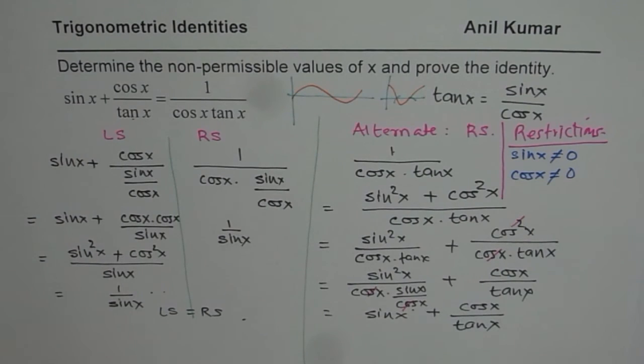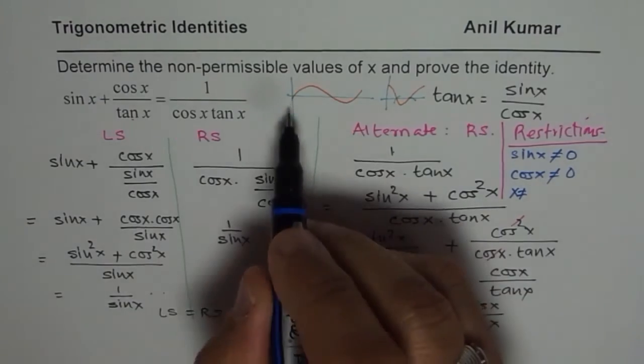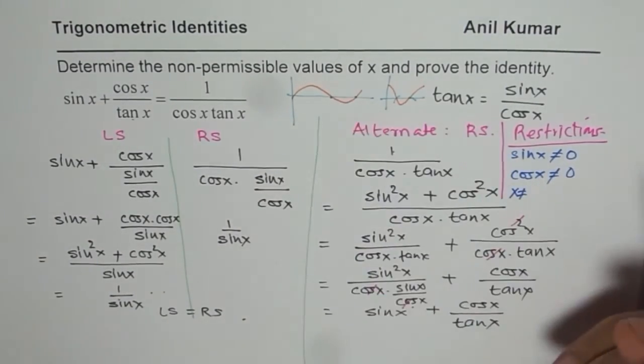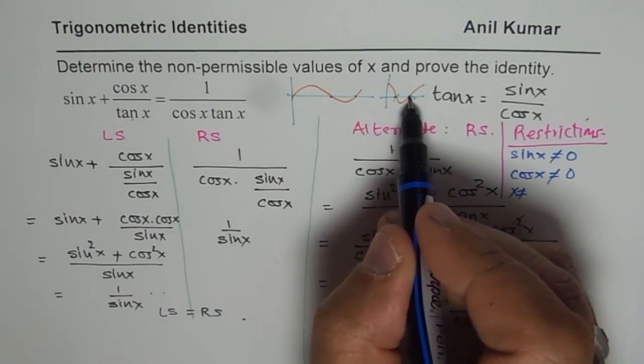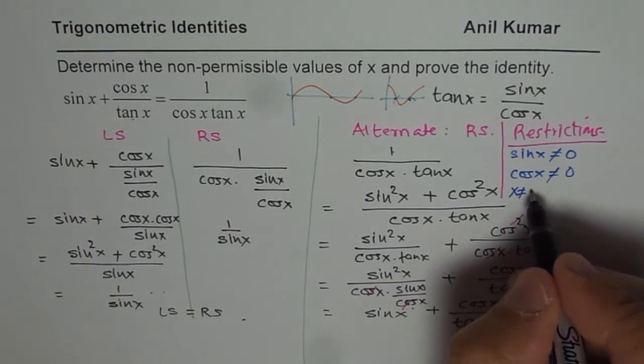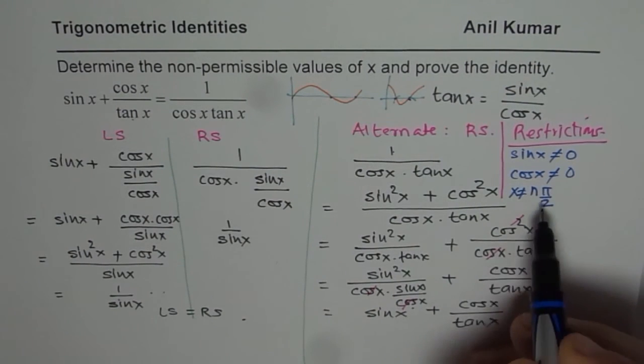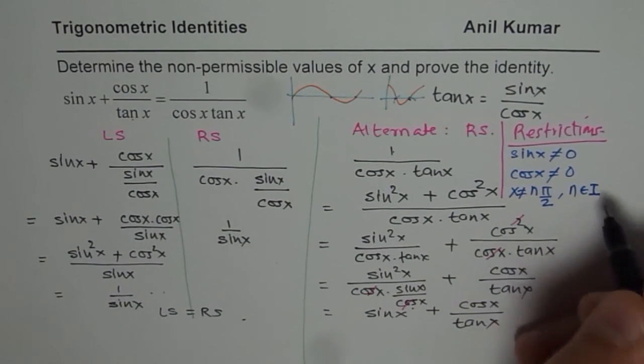that x is not equal to 0, pi and 2 pi for sin x, pi by 2 and 3 pi by 2 for cosine x. So in general, we could write them as n pi by 2. Because n could be any integer. N belongs to set of integers.